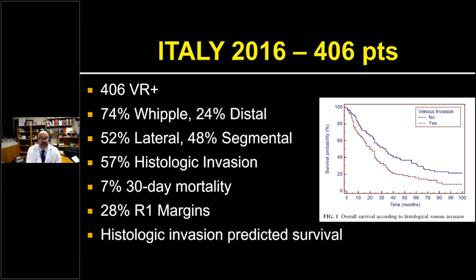The Italians in 2016 published the largest series at that time — 406 venous resections. There was no non-venous resection comparator. Most were Whipples, equally distributed between lateral and segmental resections. They reported a histologic invasion rate of nearly 60%, a 30-day mortality of 7%, and a 28% positive margin rate. Histologic invasion was the single largest predictor of survival in those patients.